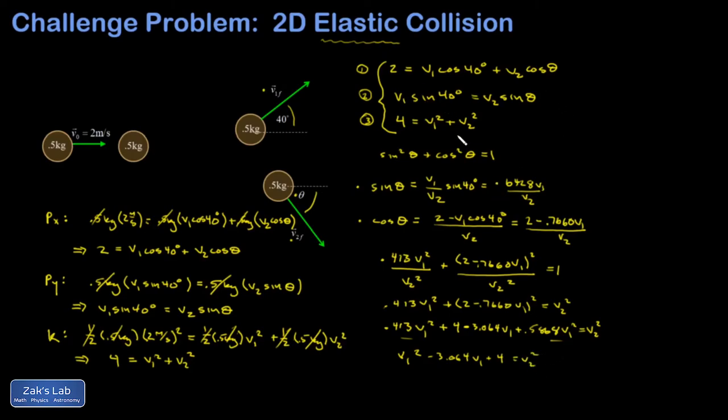Now that that's cleaned up I'm going to substitute into equation 3 and replace v2 squared with all this stuff. So I replace v2 squared with v1 squared minus 3.064 v1 plus 4. Immediately I notice something nice happens - the 4s cancel, and I get zero on the left hand side equals 2 v1 squared minus 3.064 v1.